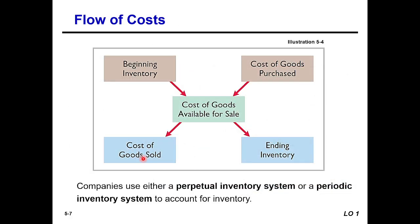Now let's look at the flow of costs. We start with Beginning Inventory, add Cost of Goods Purchased, and the total gives us Cost of Goods Available for Sale. From that total, we subtract Ending Inventory to arrive at Cost of Goods Sold — the cost of goods actually sold to customers during the period.